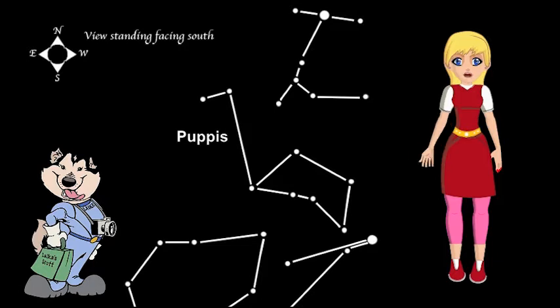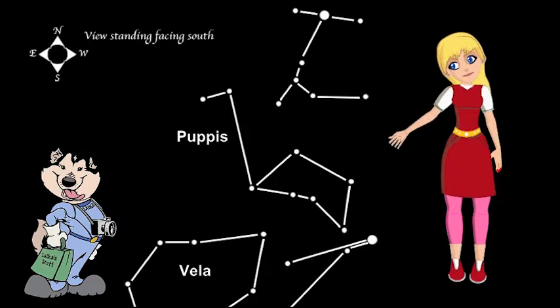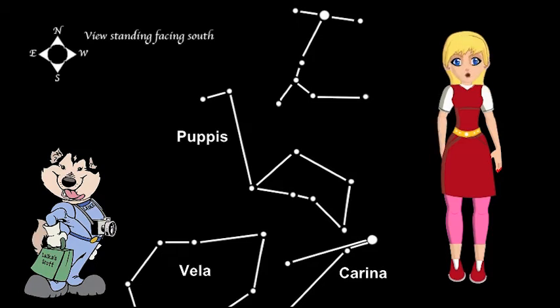Puppis means the stern of the ship. Puppis was once part of a huge constellation called the Argo Navis. The Argo Navis represented the ship Argo that Jason and the Argonauts sailed on in search of the golden fleece. But Argo Navis was way too big for astronomers, so in 1752, it was divided up into three constellations. Puppis is the stern of the ship, Vela is the sails, and Carina is the hull of the ship.